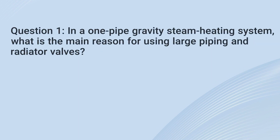Question 1. In a one-pipe gravity steam heating system, what is the main reason for using large piping in radiator valves?